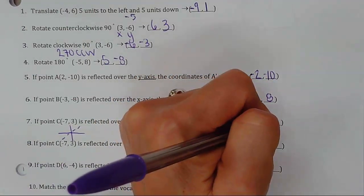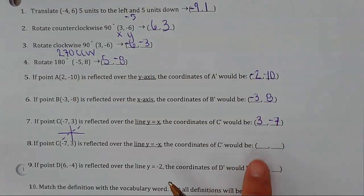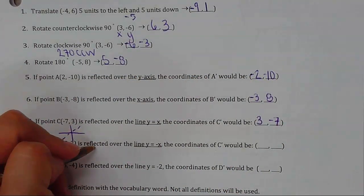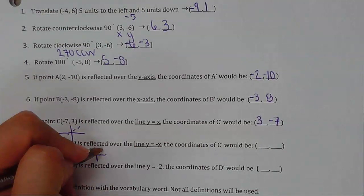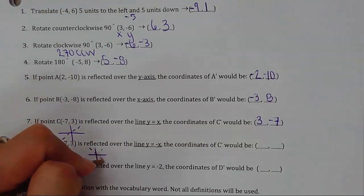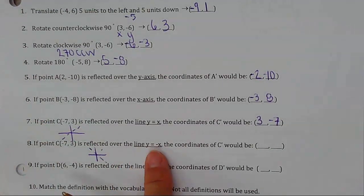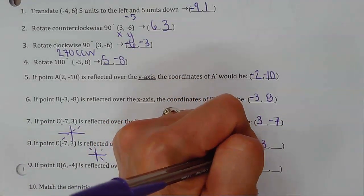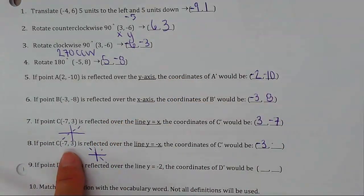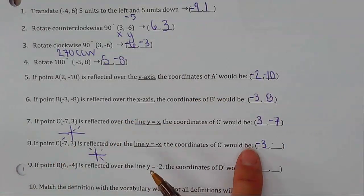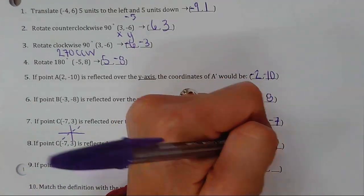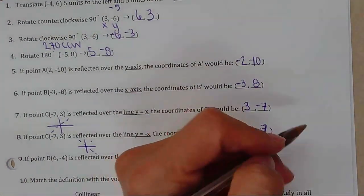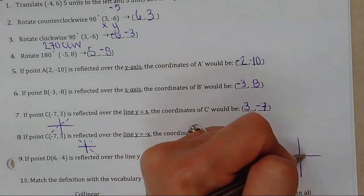The result is positive 3, negative 7. And if it's reflected over y equals negative x — remember that's a line going downward in slope — they switch places and become opposite. So the 3 becomes negative and the 7 becomes positive.